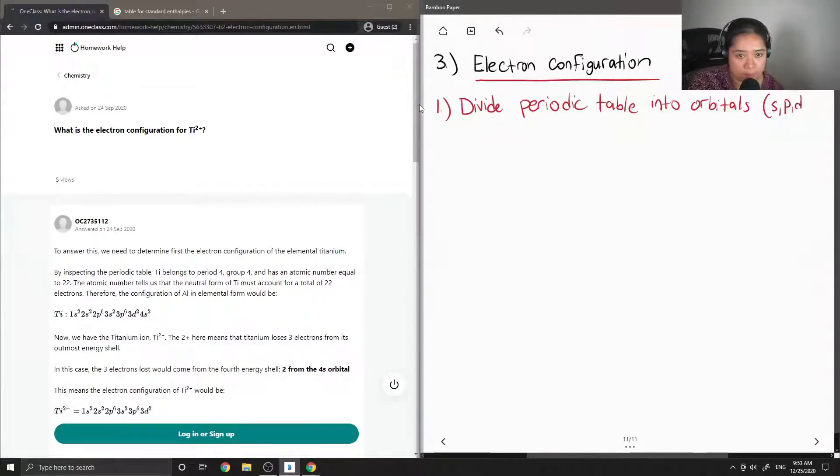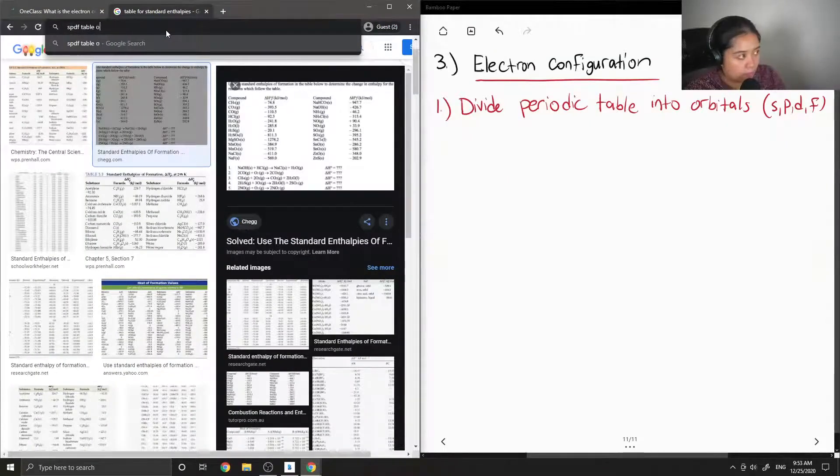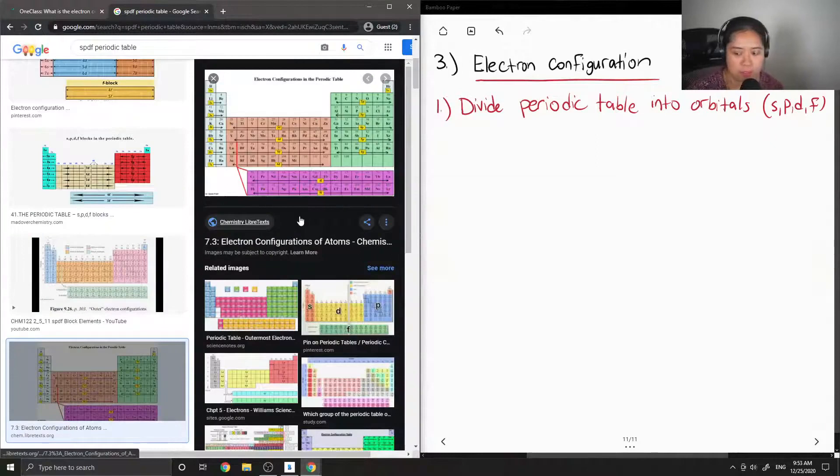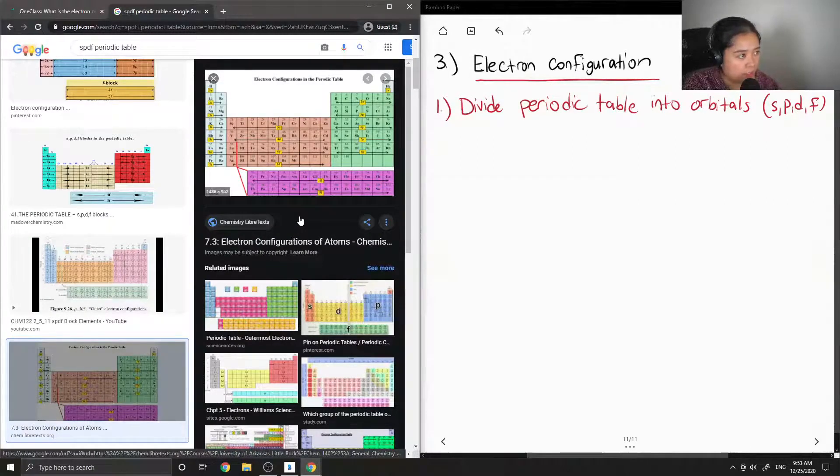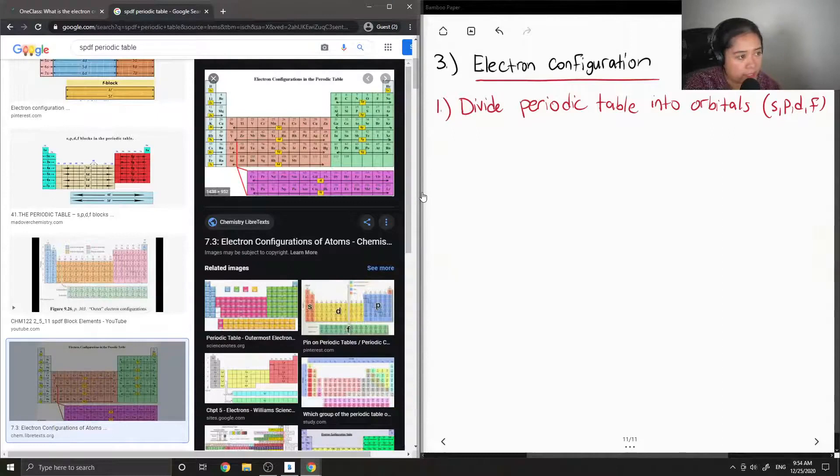So either s, p, d, and f. So I can show what that looks like on the periodic table. So it's actually pretty simple to divide it. You can see the two left columns and helium are light blue and they correspond to the s block. The green kind of rectangle here is the p block and the middle transition metals is the d block. And finally the last two, the bottom two rows, are the lanthanides and actinides and it is the f block.